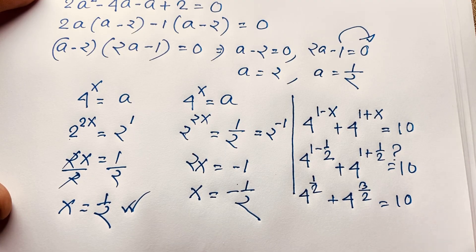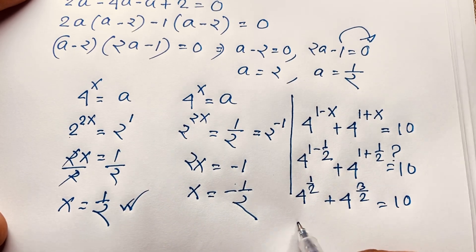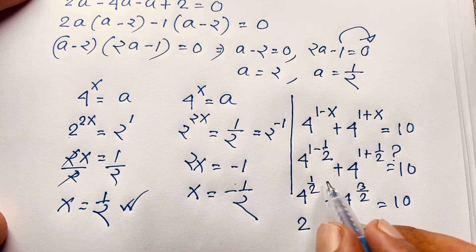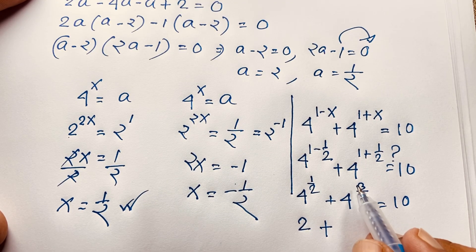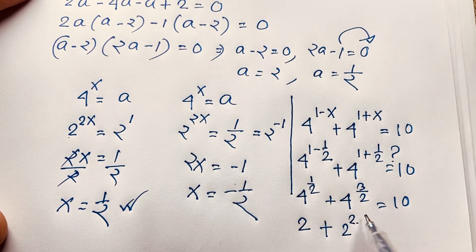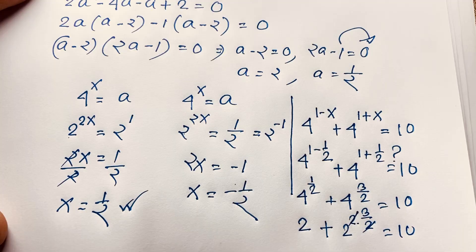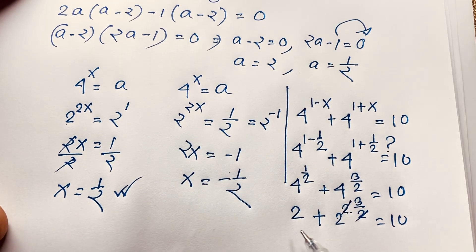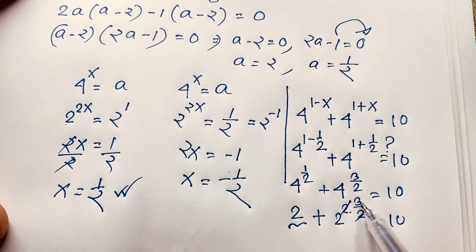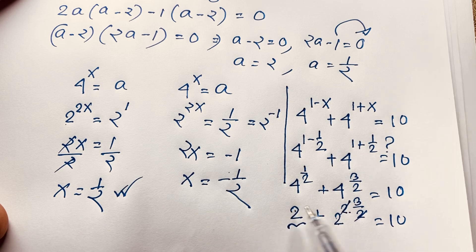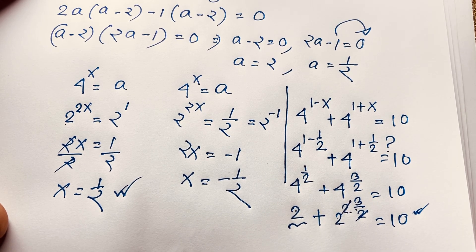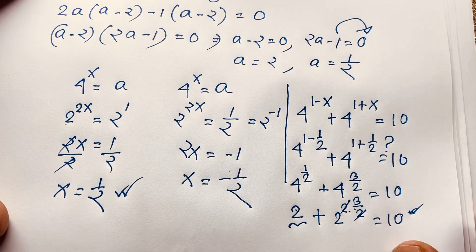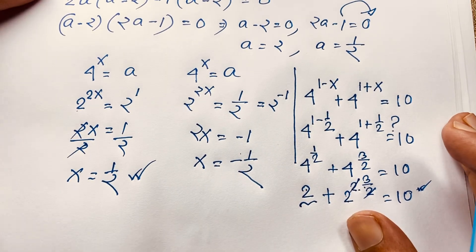Now, 4 to the power 1/2 is the square root of 4, which equals 2. And 4 to the power 3/2 equals (2 squared) to the power 3/2, which equals 2 to the power 3, which equals 8. So 2 plus 8 equals 10. The left hand side equals the right hand side — verified!